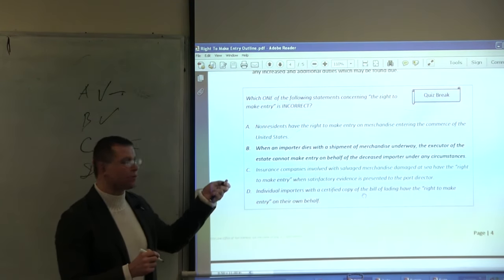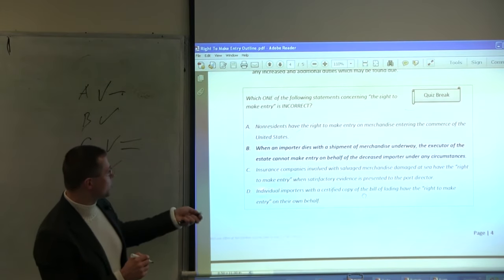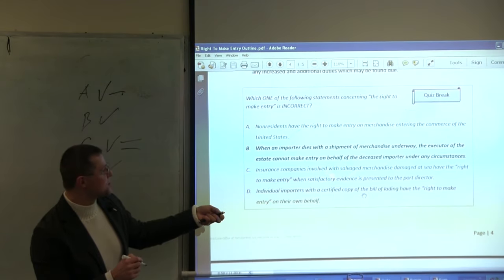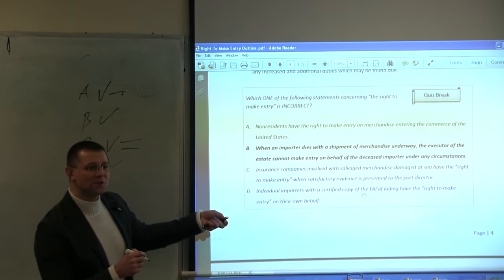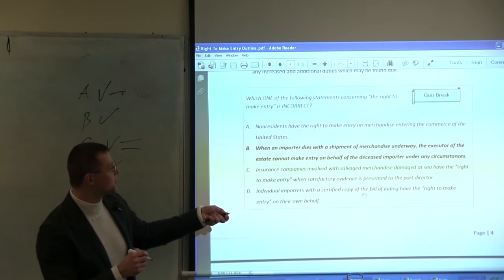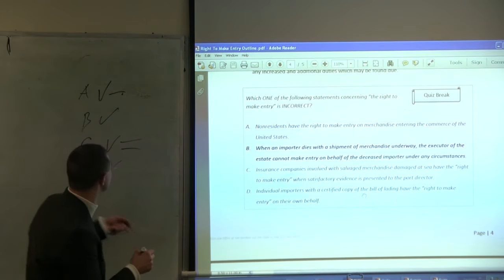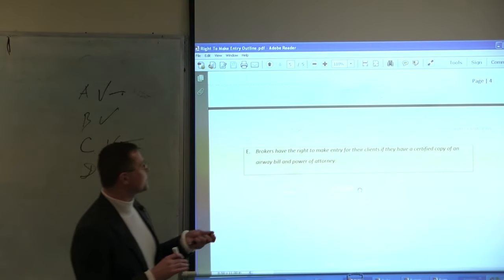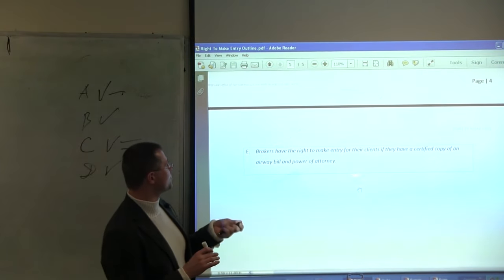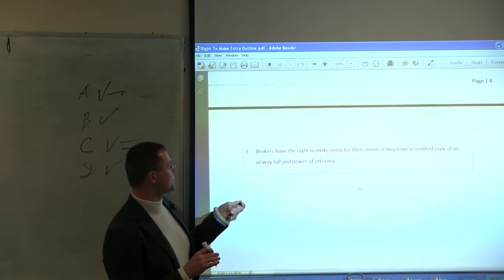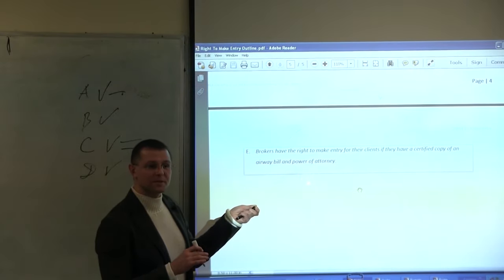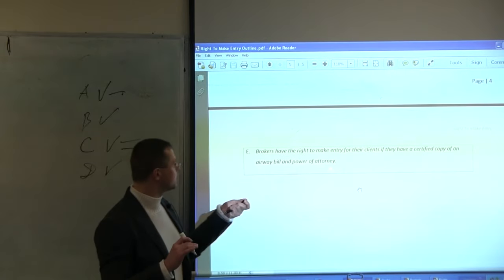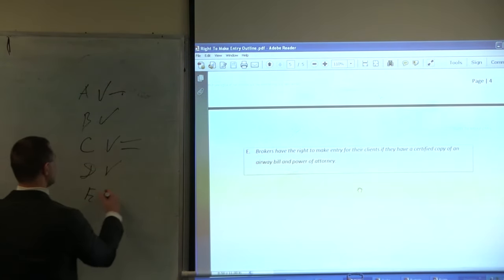Notice, when I was saying we are talking about incorrect ones, right? So this is correct, provided this is in international waters, provided this is not that Spanish galleon gold or property of foreign government. We do not know that. And E: Brokers have the right to make an entry for their clients if they have a certified copy of the airway bill and the power of attorney. So this means the broker is a proper broker, is authorized. Right? Power of attorney and airway bill. So E is check.